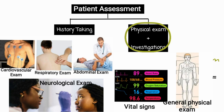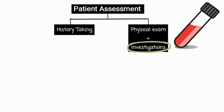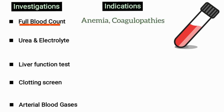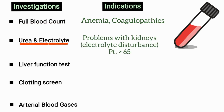Based on the physical exam, if you are suspecting any comorbidity, you will advise certain investigations. A full blood count is advised if you are suspecting anemia or other coagulopathies, because if not corrected, it can cause excessive bleeding and cardiovascular events during surgery.